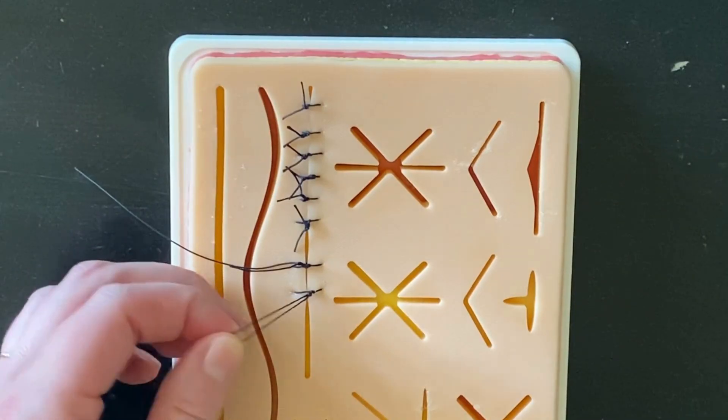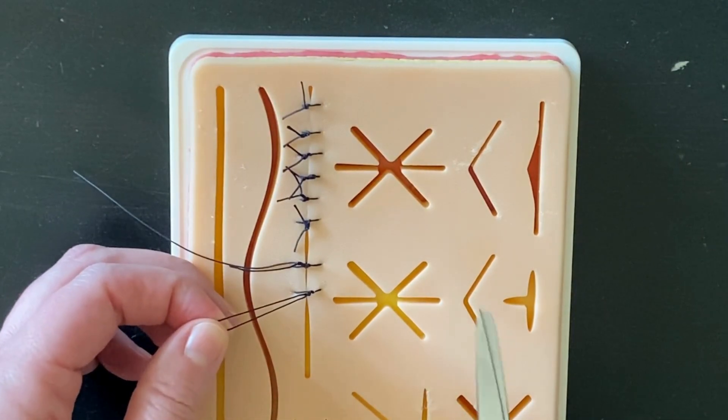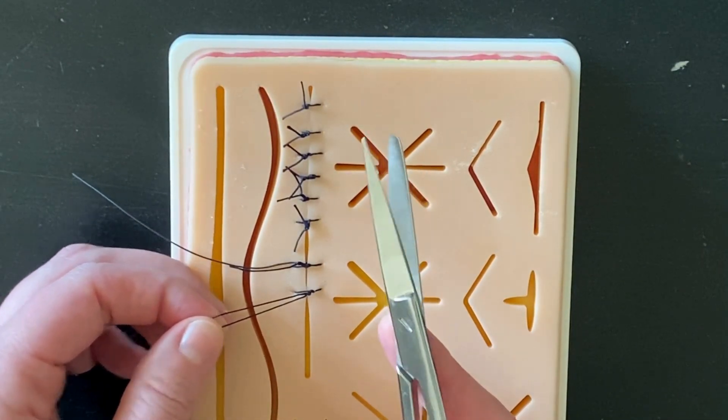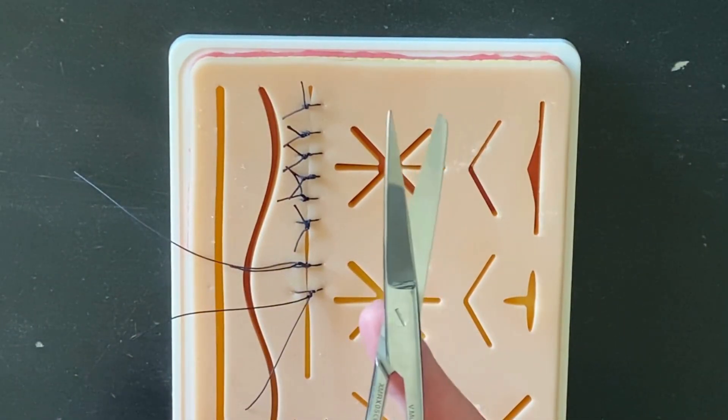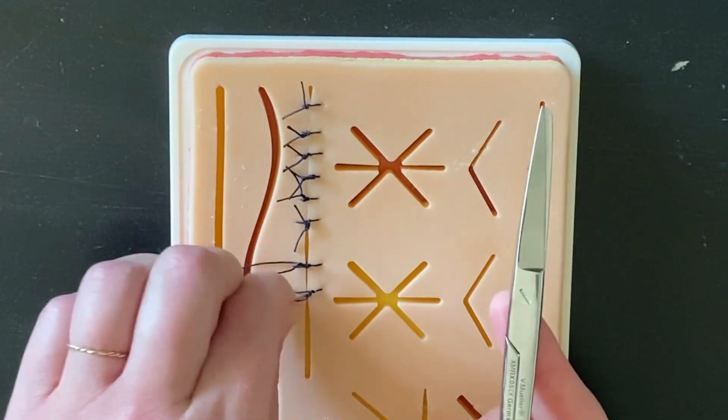Say your surgeon is across the table from you and asks you to cut a suture. Your suture scissors, which we've gone over before, have one small tine and one large tine. Usually I have my ring finger and my thumb in those eyelets.